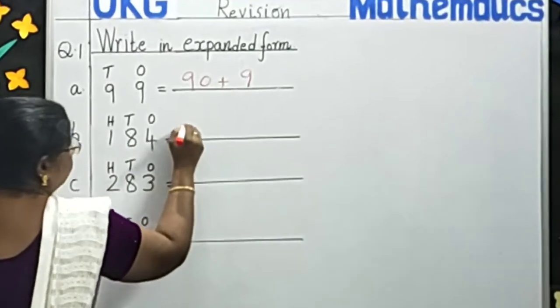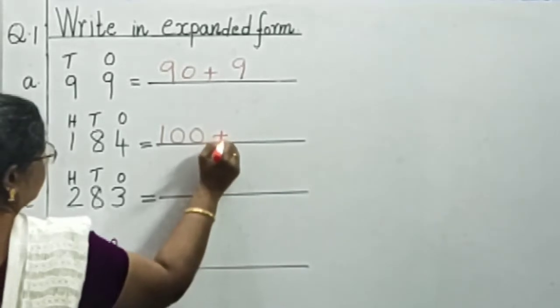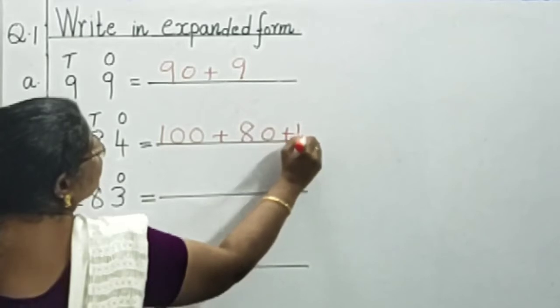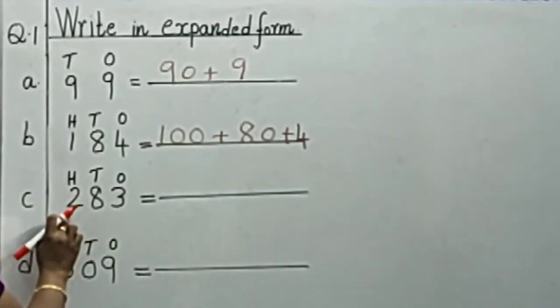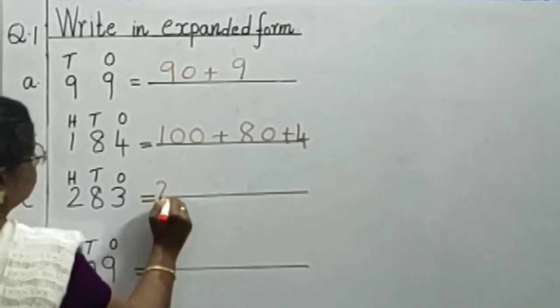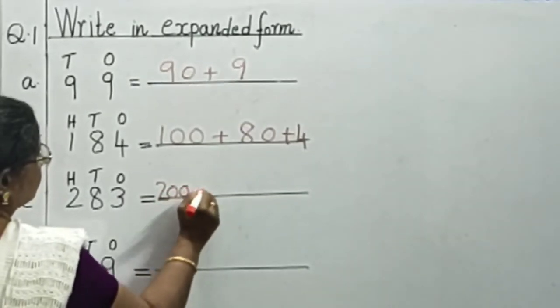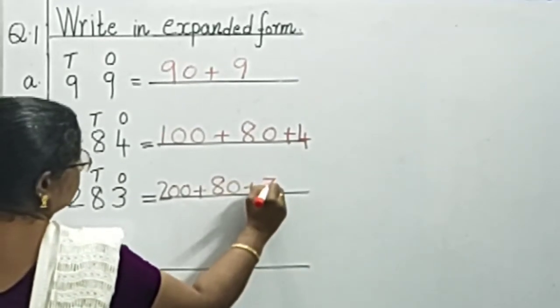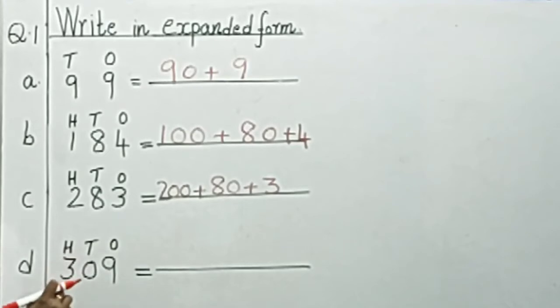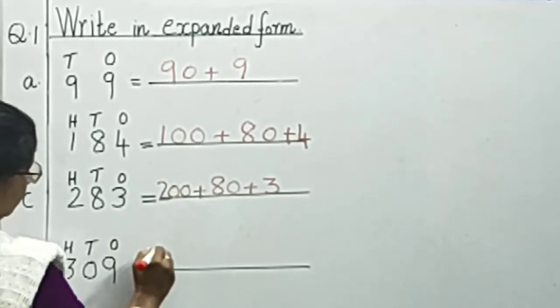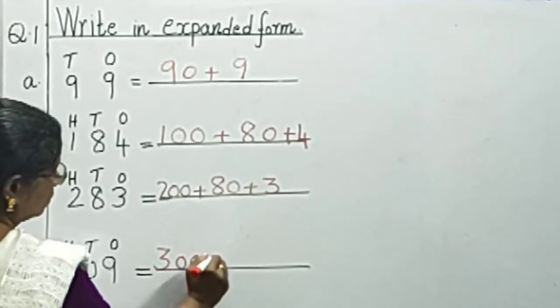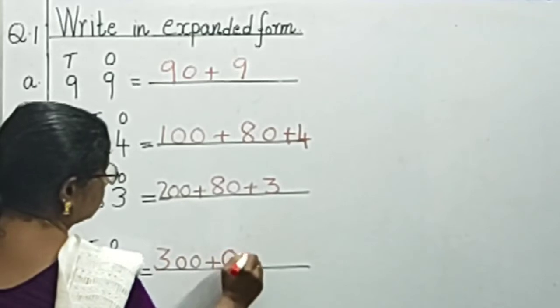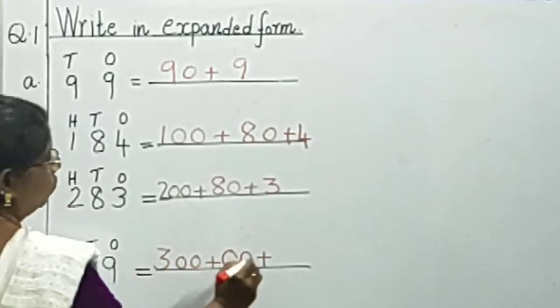184: 100 plus 8 tens, 80, plus 4 ones. Now next, 283: 200 plus 8 tens, 80, plus 3 ones. Now next, 309: 300 plus 0 tens, so we will put two zeros, plus 9 ones.